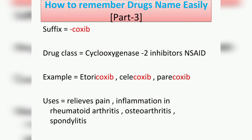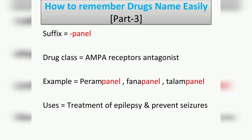The next suffix is '-coxib', which belongs to the drug class cyclooxygenase-2 (COX-2) inhibitors, a type of NSAID (non-steroidal anti-inflammatory drug). Examples include etoricoxib, celecoxib, and parecoxib. Their usage is to relieve pain and inflammation in rheumatoid arthritis, osteoarthritis, and spondylitis.